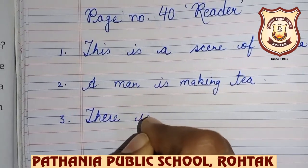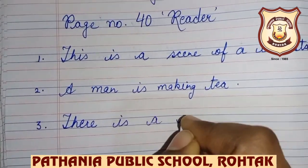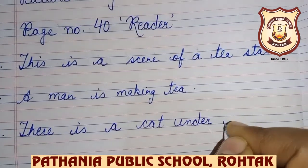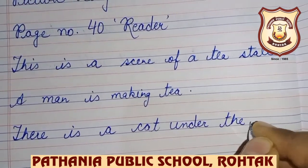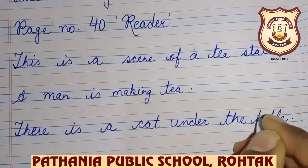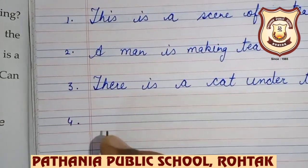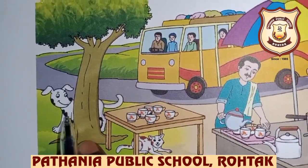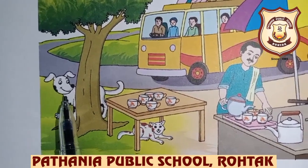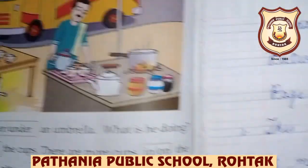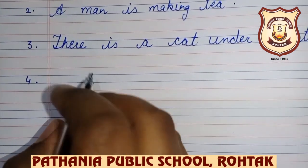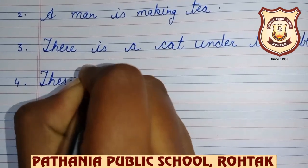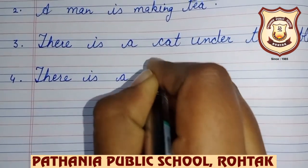The third line is: 'There is a cat under the table.' The fourth line is: 'There is a dog behind the tree.' As you can see, the dog is also looking at the cat.